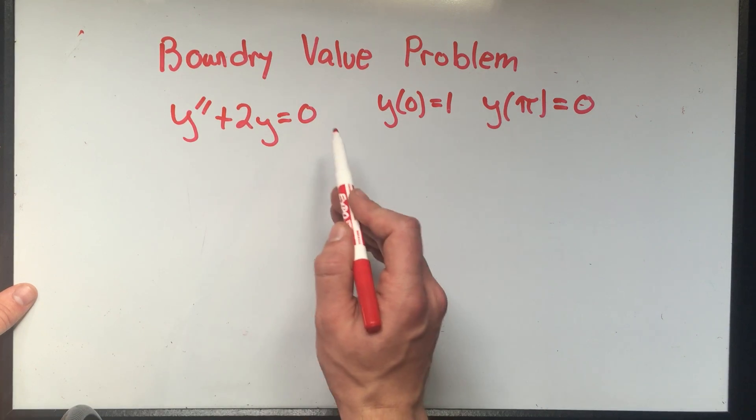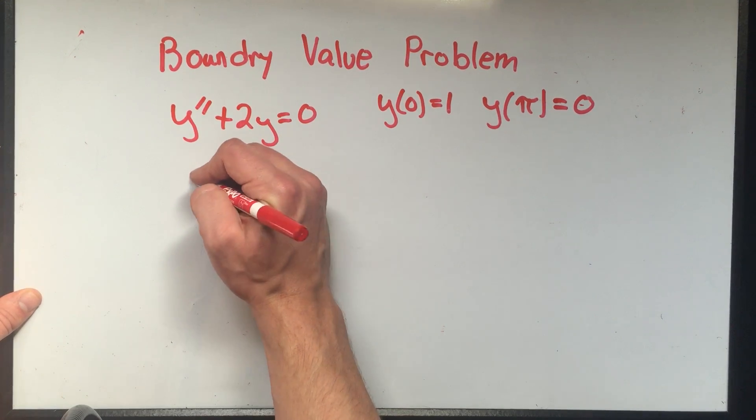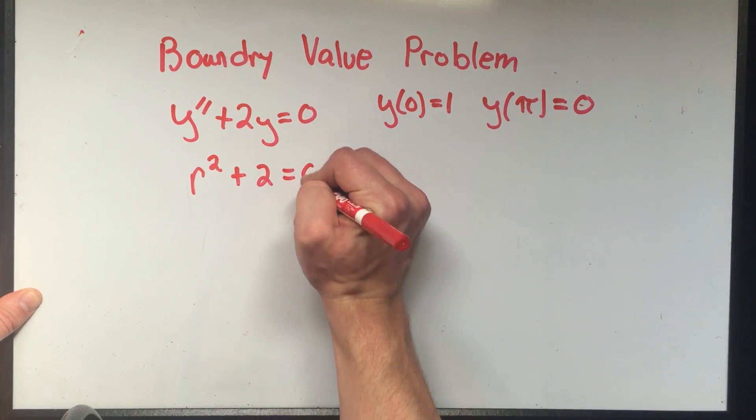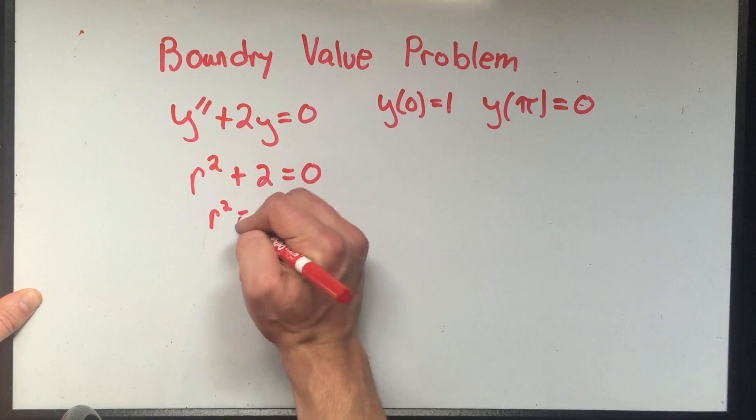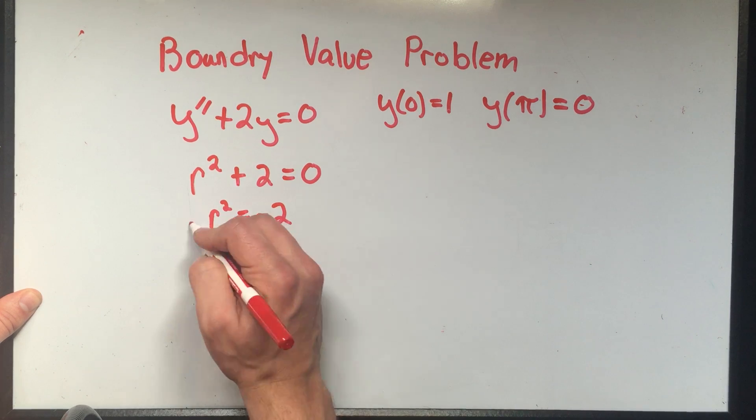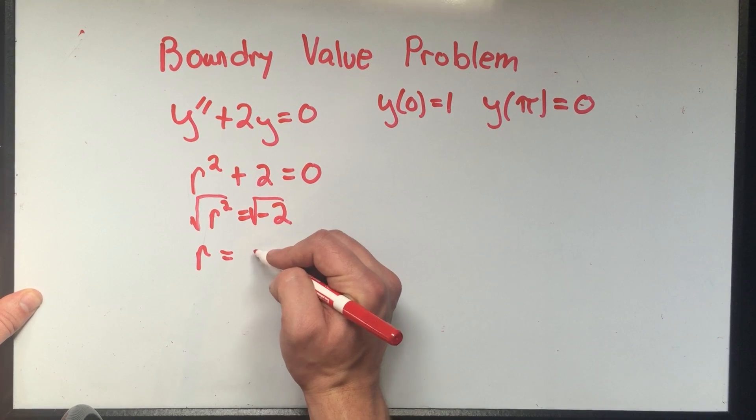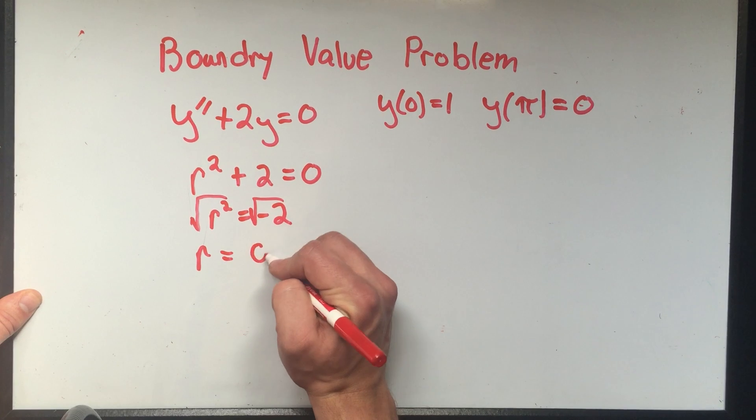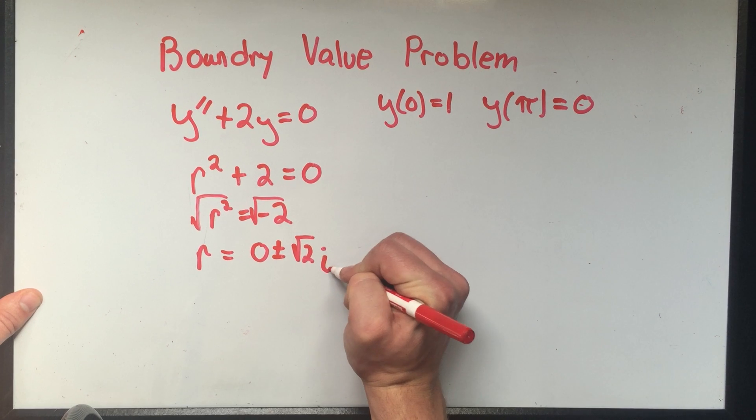Since this is equal to zero, it's homogeneous, so I can just look for the characteristic equation. That's r squared plus two equals zero. And I can solve this, not too hard, subtract two from both sides, and I'll take the square root of both sides. So it looks like r is going to be, well, this is an imaginary thing, so I'll write zero plus or minus the square root of two i.